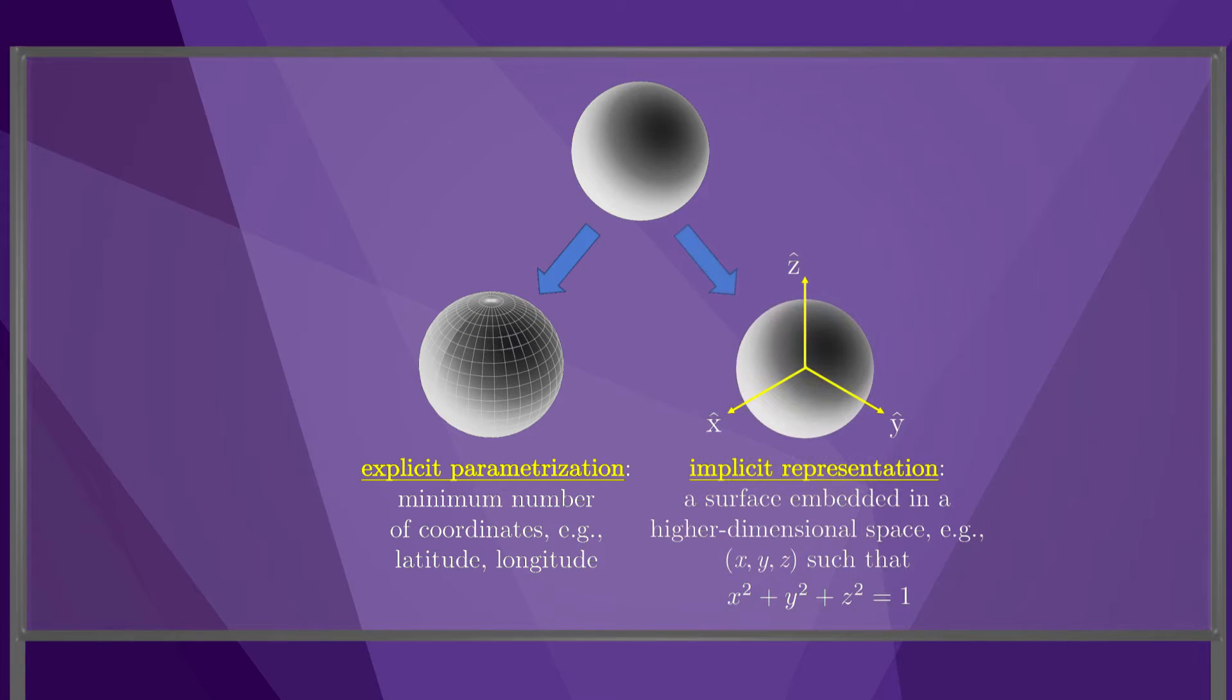Or we could use an implicit representation, which uses more coordinates subject to constraints. An implicit representation views the n-dimensional space as embedded in a higher-dimensional Euclidean space. In the sphere example, we view the two-dimensional surface as embedded in a three-dimensional Euclidean space, and we use three Euclidean coordinates x, y, and z, subject to a single constant radius constraint.